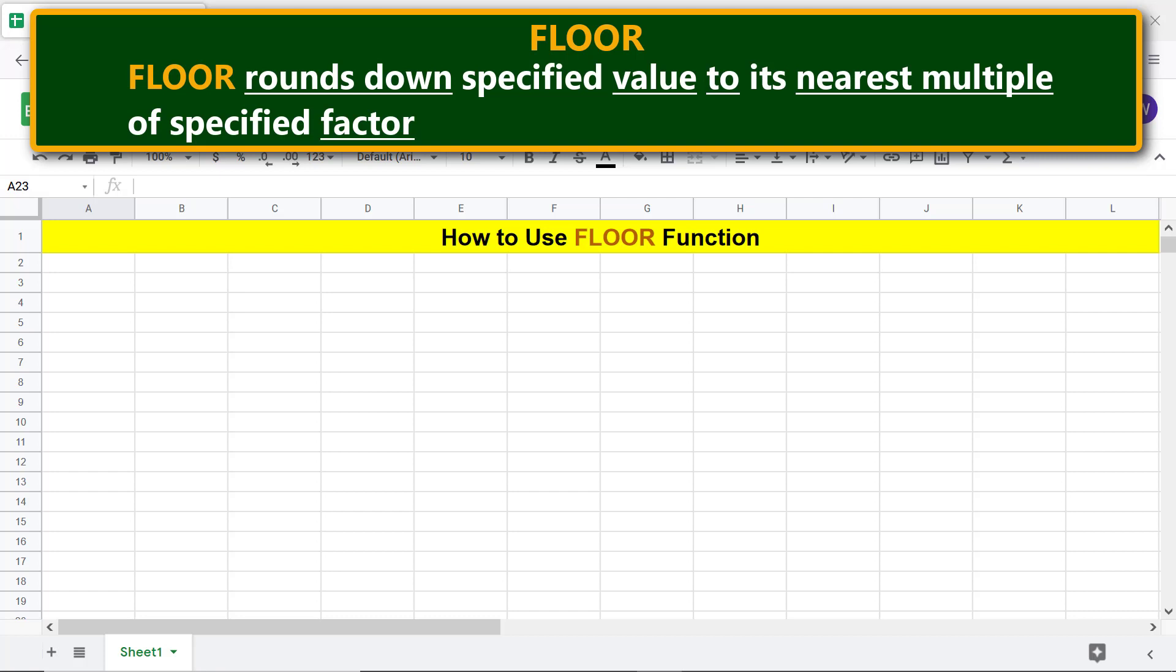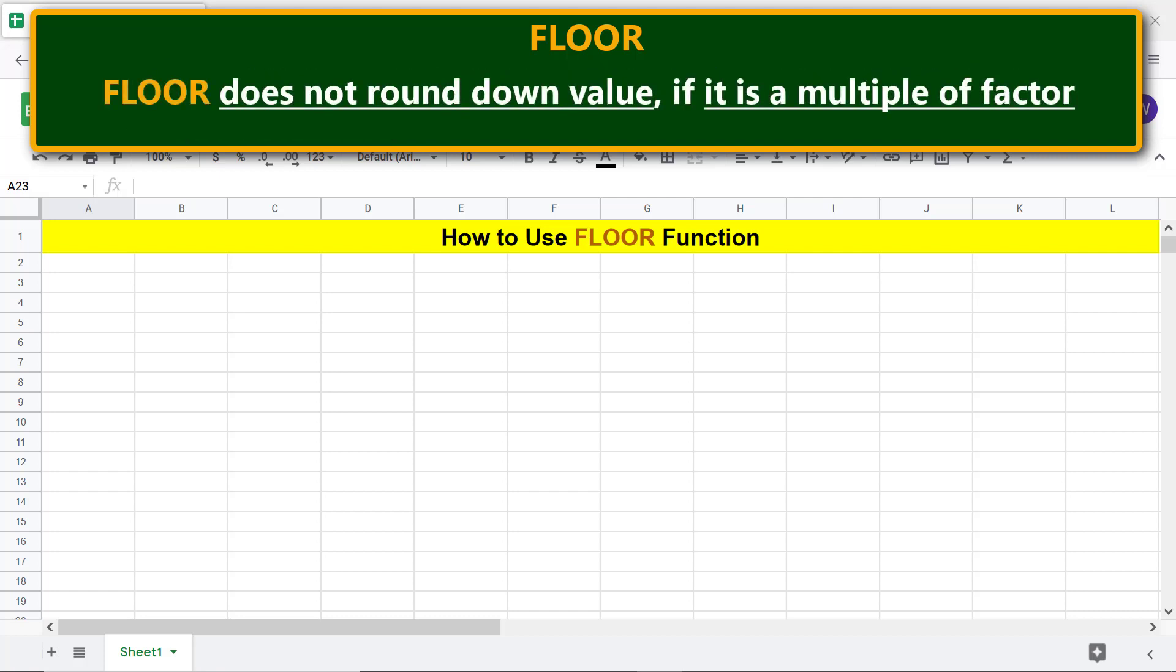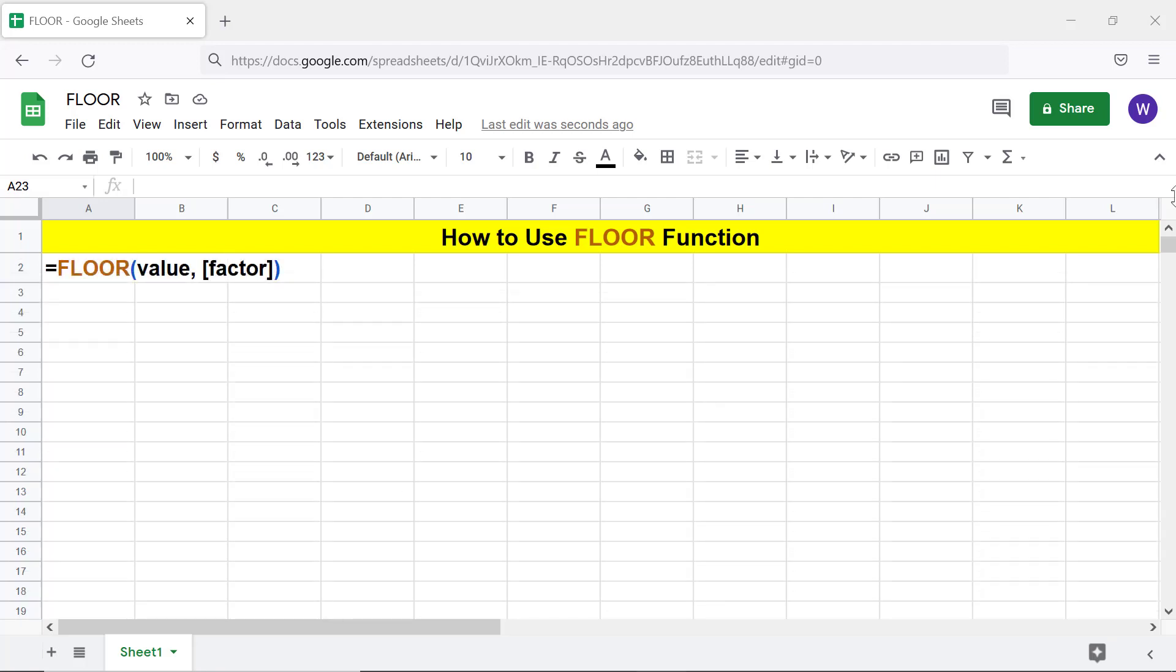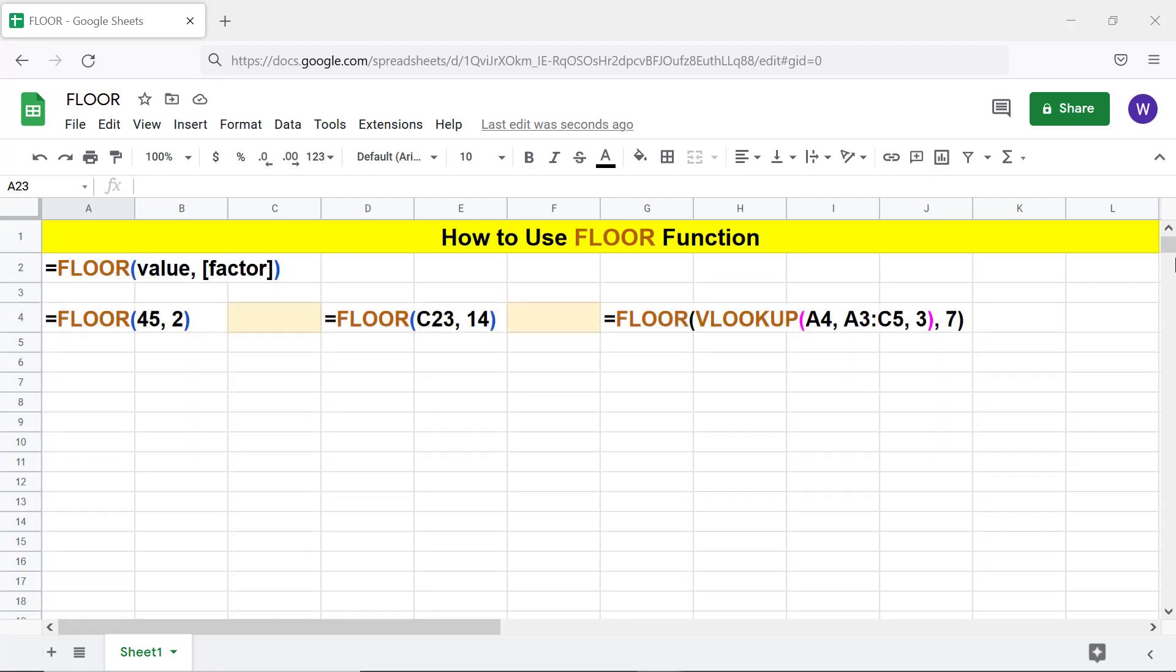FLOOR does not round down a value if it is already a multiple of the factor. Let's look at the format of the FLOOR function formula. Here are three examples. Value is the number to round down and can be, for example...